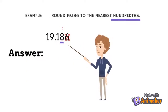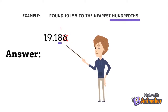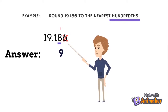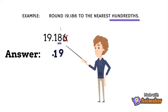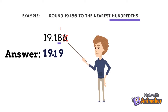Step 3: Drop all the digits to the right of the place you are rounding to. To get the answer, 1 plus 8 equals 9. Then bring down 1, decimal point, 9, and 1. So the answer of 19 and 186 thousandths rounded to the nearest hundredths is 19 and 19 hundredths.